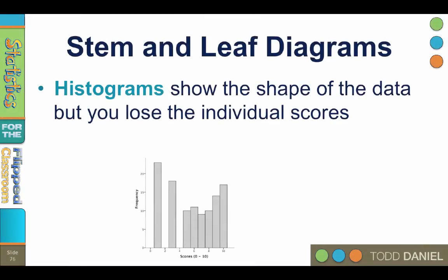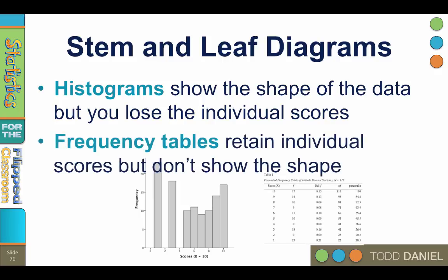Histograms show the shape of the data, but you lose the individual scores. Here we see a bimodal distribution, but it's difficult to tell how many fives there are in the data set. Frequency tables retain the individual scores, so we can see how many fives there are, but they don't show us the shape.